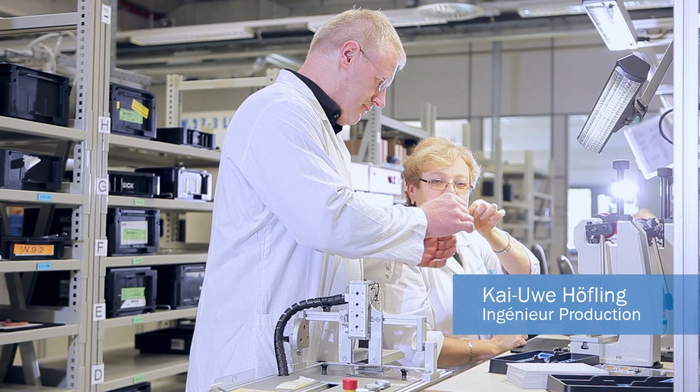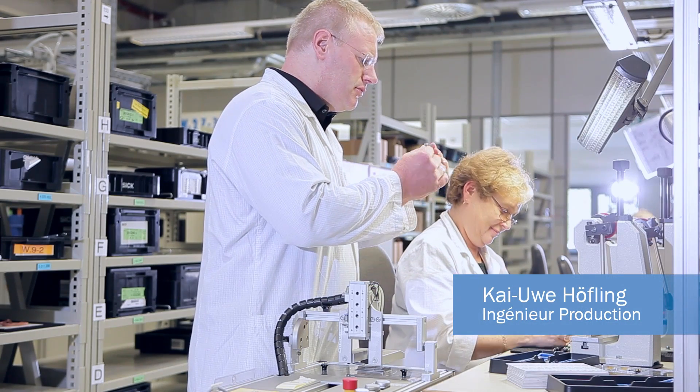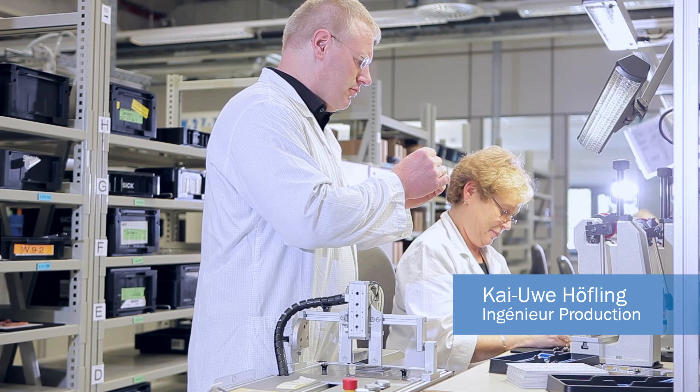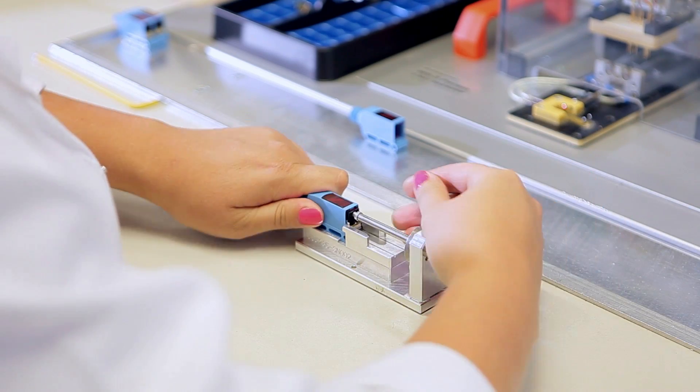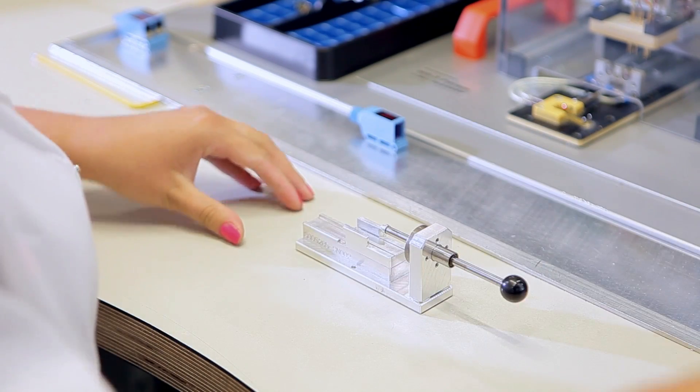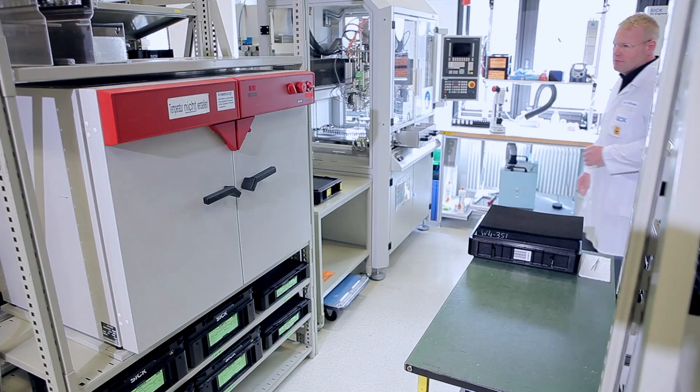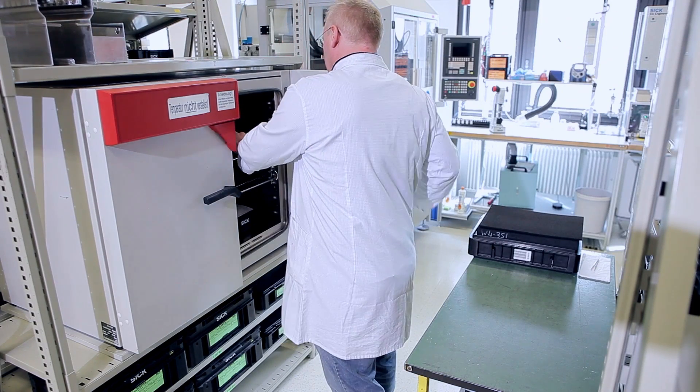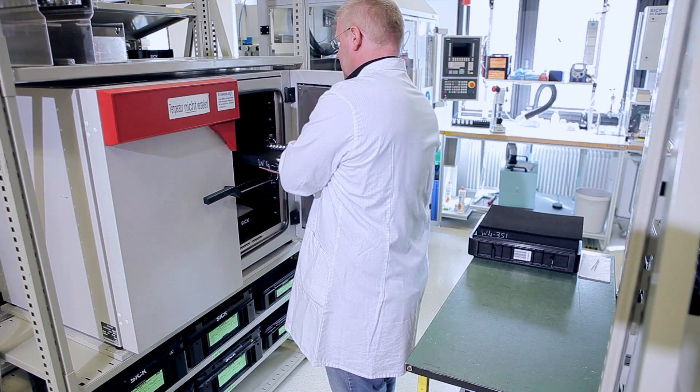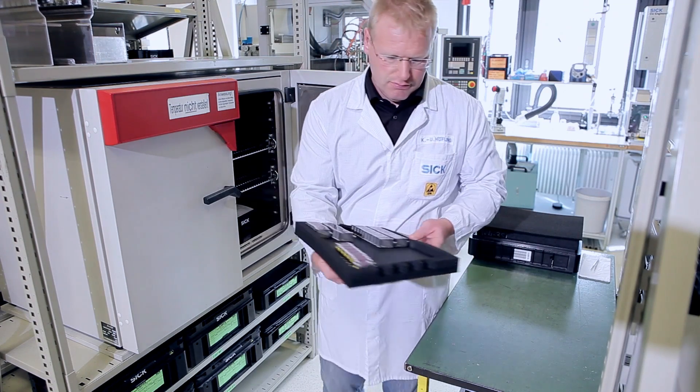To accomplish this, pre-assembly production islands have been set up for assembling and configuring individual components. The finished laser inlays are then connected to the respective housing types on the assembly lines. The stainless steel units are dried for several hours at 60 degrees Celsius before sealing to remove any residual moisture from the sensors.